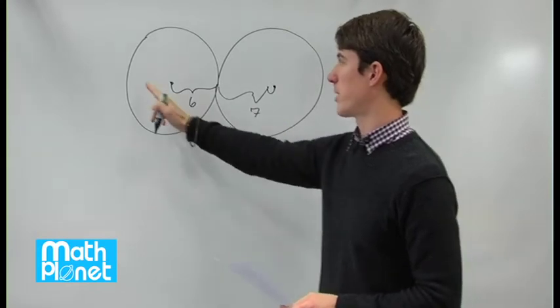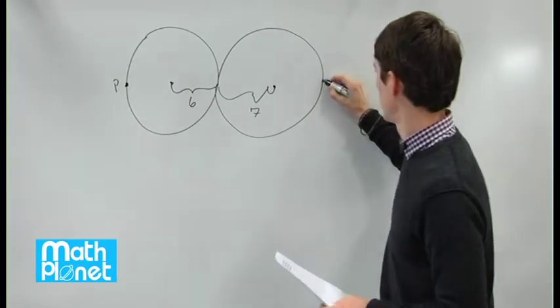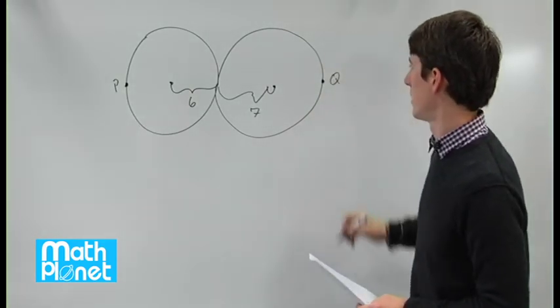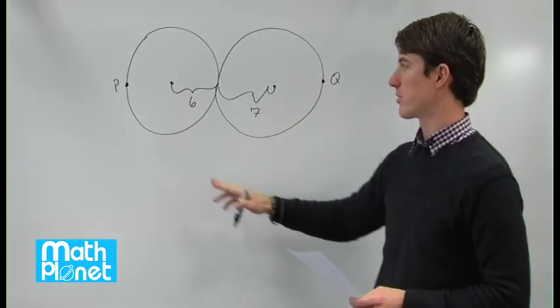So obviously we need to put them on opposite ends of our circles, so we can have P here, Q here, and the distance between those is just the diameter of this plus the diameter of this.